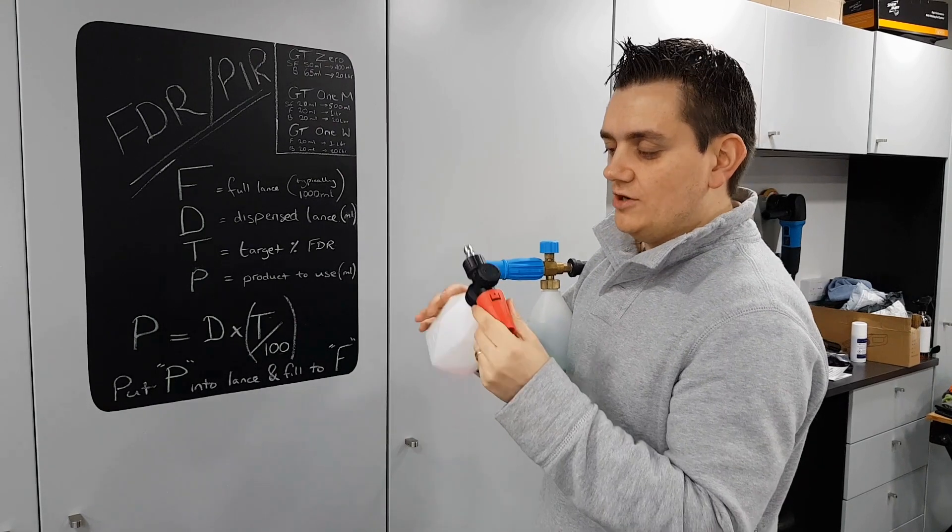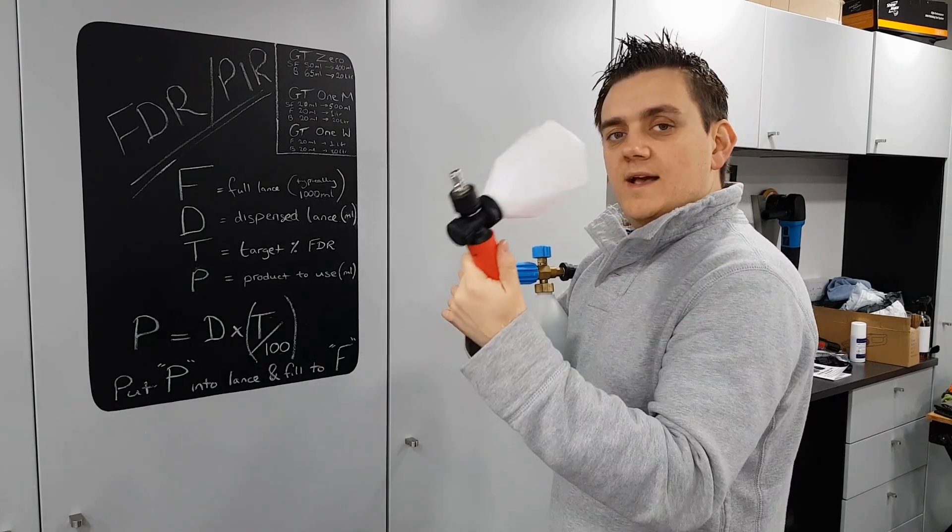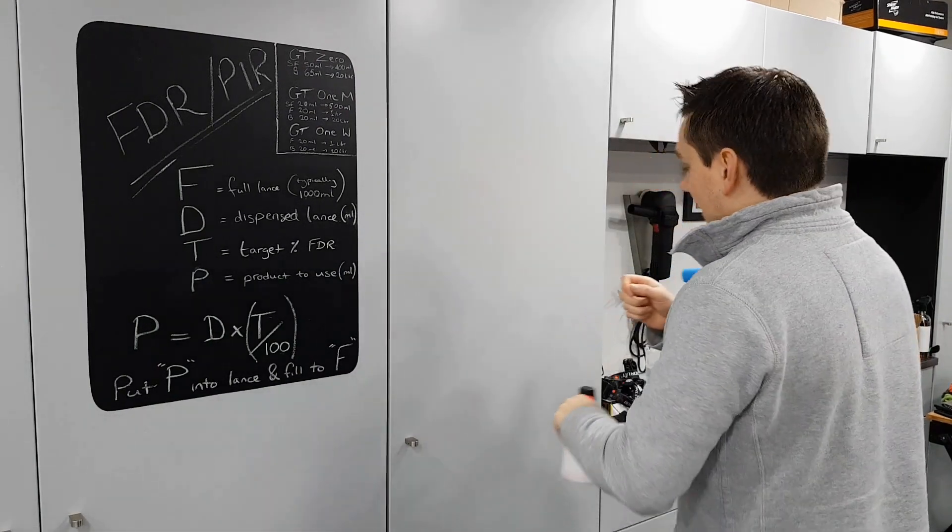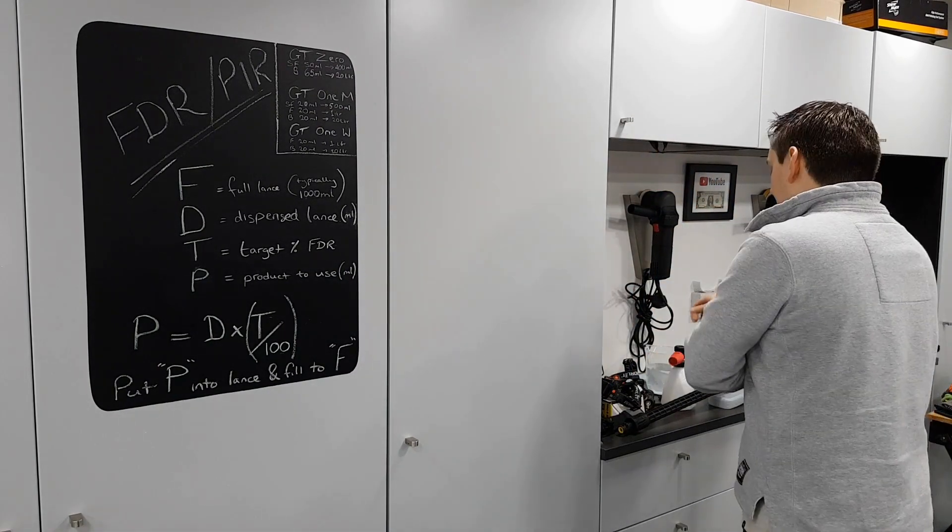But again, this has a dilution ratio, dilution knob on the top. Again, change that or change the lance and you're going to have a different PIR again. So what I'm saying is you're likely going to have to work this out more than once.